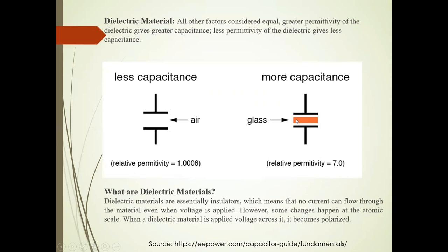Now second here, the dielectric medium material is glass. Its relative permittivity is 7, so it gives more capacitance.